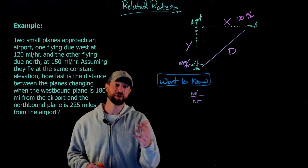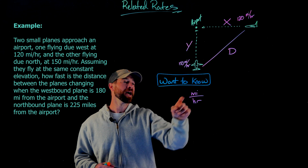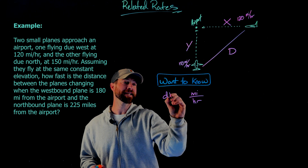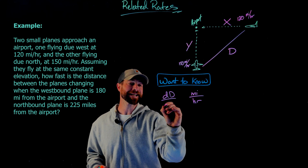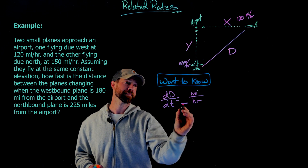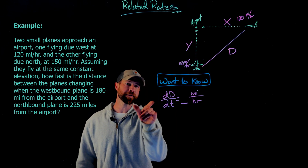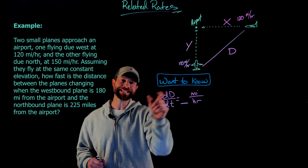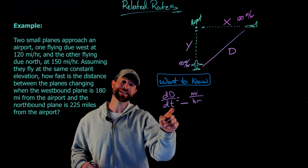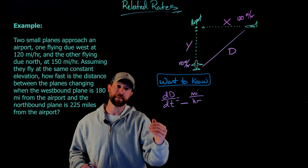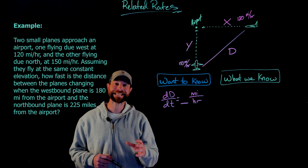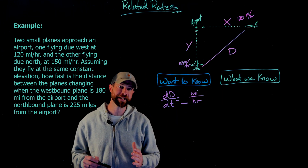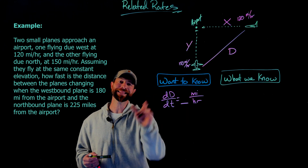I want to write that rate in terms of differentials. I'm looking for the change in the distance over time, because hours is a unit of time. This will feel a little weird being the first example — where did the dT come from? But when I read this, it's the change in the distance D over the change in time, and I'm using time in my denominator because my units are hours.